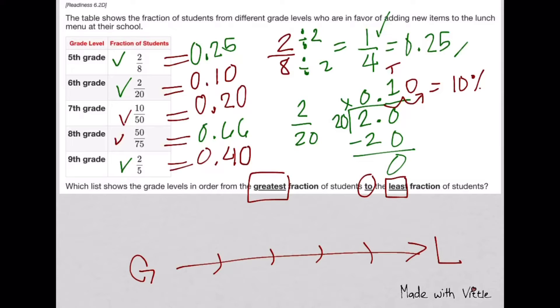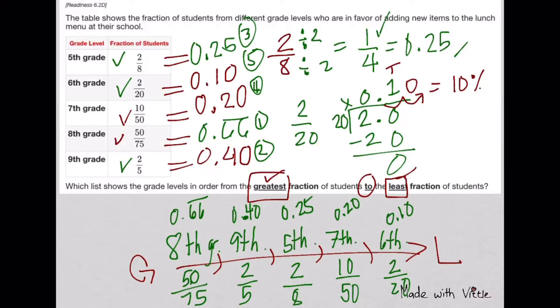Going back to the question, they want it from greatest to least. Looking at their decimal forms, and think of them like money, you can arrange them easily from greatest to least.